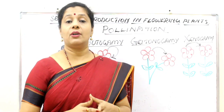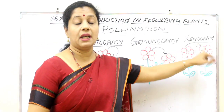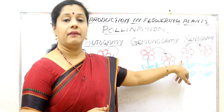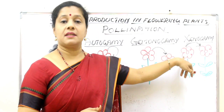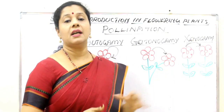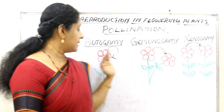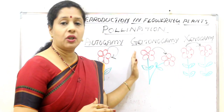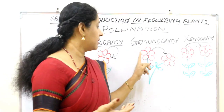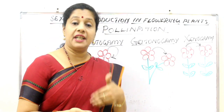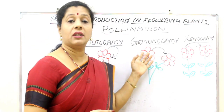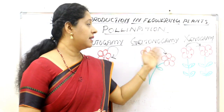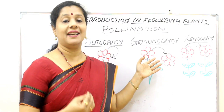The third type is xenogamy, where pollen transfer occurs between two different plants — flowers of two different plants belonging to the same species. Even dioecious plants can have xenogamy. Autogamy is strictly self-pollination; xenogamy is strictly cross-pollination. Geitonogamy is functionally cross-pollination because it happens between two different flowers, but genetically it is self-pollination because the same genome is present in both the pollen grain and the female gamete.